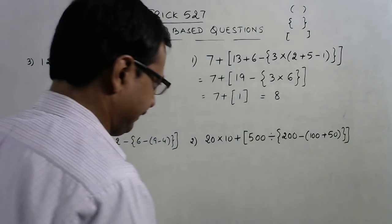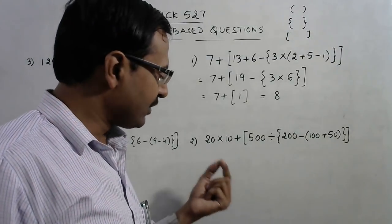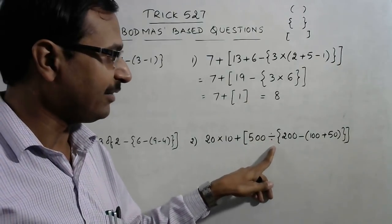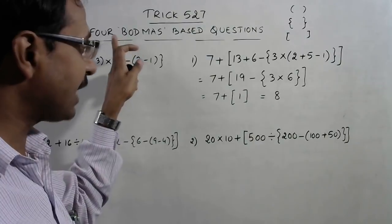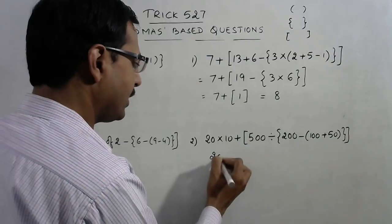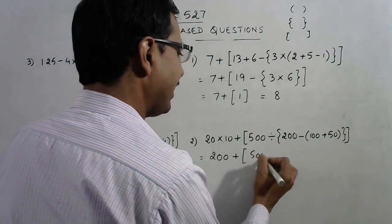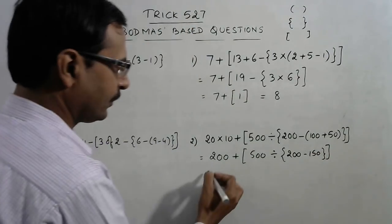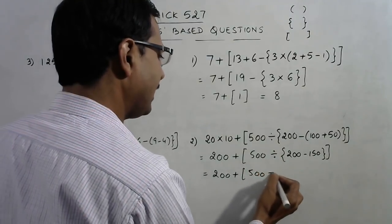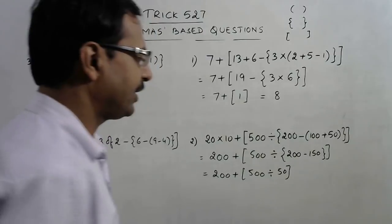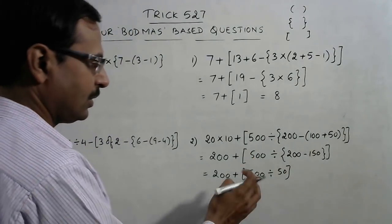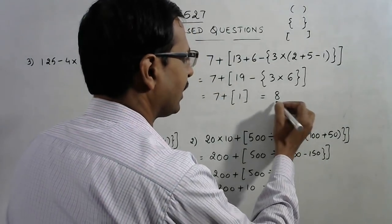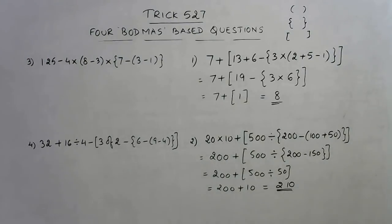For the next problem: 20 into 10 — we multiply first and add later, so we multiply directly. Removing the brackets: 20 into 10 is 200. Then 200 plus 500 divided by — this bracket gives 150, so one bracket is resolved. Now 200 plus 500 divided by 50 — 500 divided by 50 is 10 — so 200 plus 10 gives the answer 210.